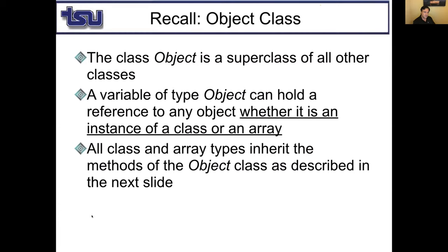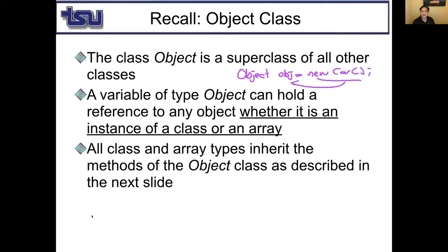We know that a subclass object is a superclass object. For example, a grad student is a student and a Honda is a car. Since Object is the superclass of all classes, you can create an object of any class and assign it to an Object reference. For example, you can have an Object reference obj and then say new Car.